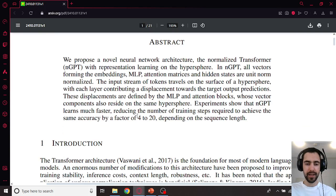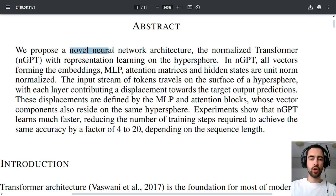NVIDIA just invented 4 to 20 times faster transformer architecture while keeping the same accuracy of the transformer. In this novel neural network architecture they turn the whole GPT into a ball, or I should say hypersphere,